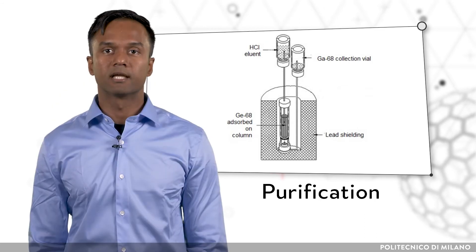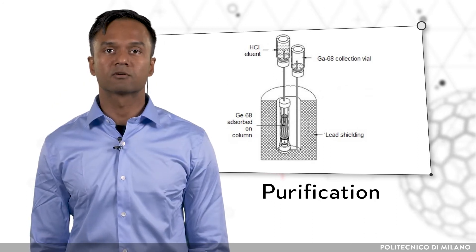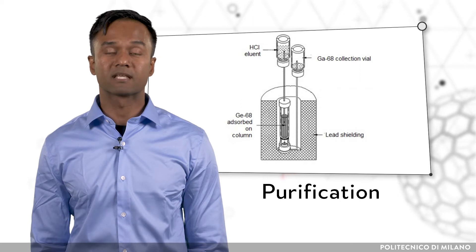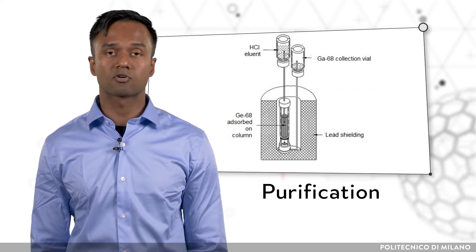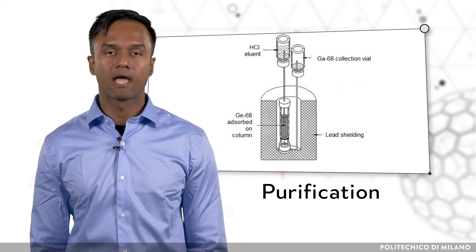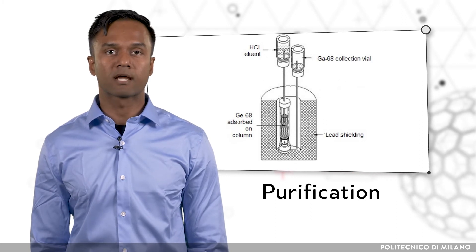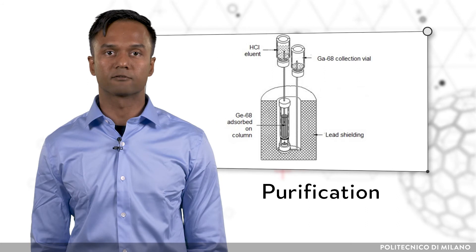For example, in generators the parent radionucleid ions are trapped in the stationary phase using strong ionic interactions, and the daughter radionucleid ions are eluted using appropriate buffers.